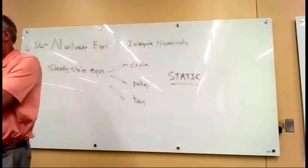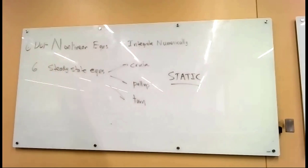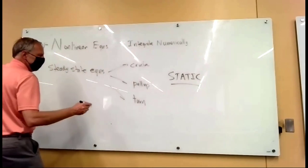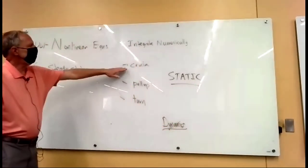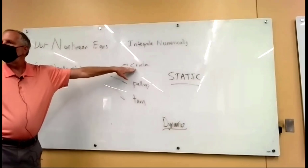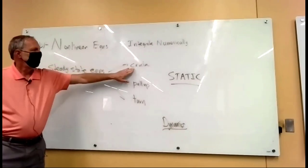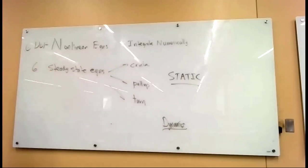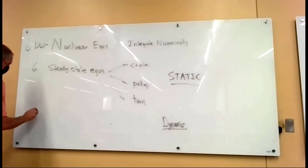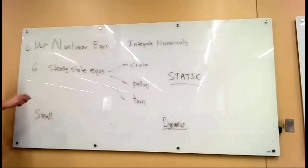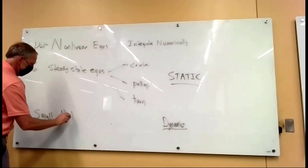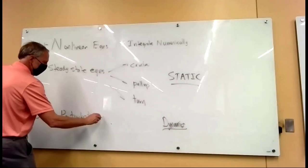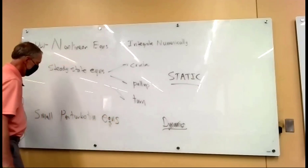And then we did some special cases where we had cruise, pull up, and a turn. The steady state stuff is really almost static analysis — the accelerations are zero, so this is essentially statics. And so the last thing we want to do is dynamics, which means if we're in steady state cruise initially and a gust comes along or the pilot moves the stick, then what are the dynamics of the airplane on top of that steady state condition? To do that we can linearize the equations. So what we're going to have is a small perturbation equations — that's next.